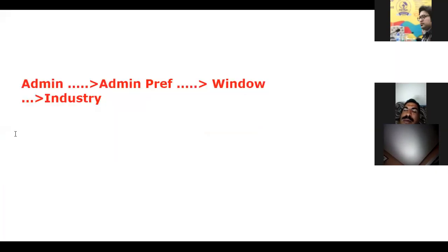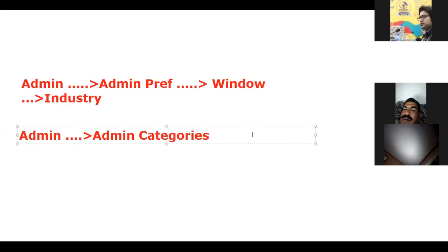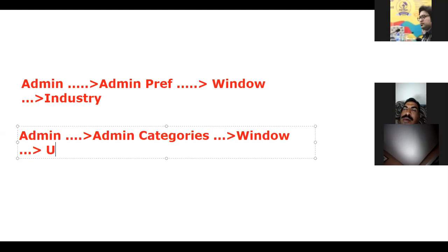For the second setting, click on Admin again — this time select Admin Categories, not Admin Preferences. Once you click Admin Categories a new window will open, and in this window you need to search for Unit of Measure. Let me first explain what unit of measure means using a BOQ.